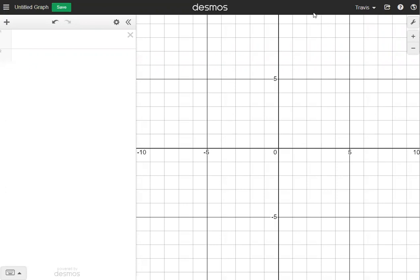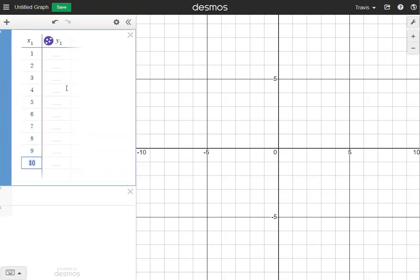To create my regression, the first thing I need is a scatter plot and a table to go along with it. I'm going to go to the top left-hand corner and hit the plus button, and I'm going to click on table, option number three. I'm going to put all the x values under the x1 column. My x values are going to be 1 through 12, so I'm going to go all the way down to 12.